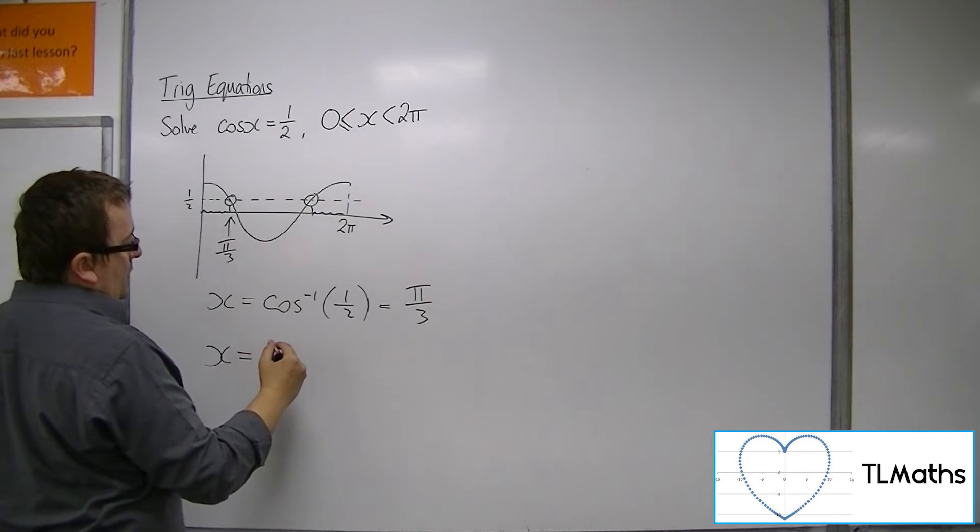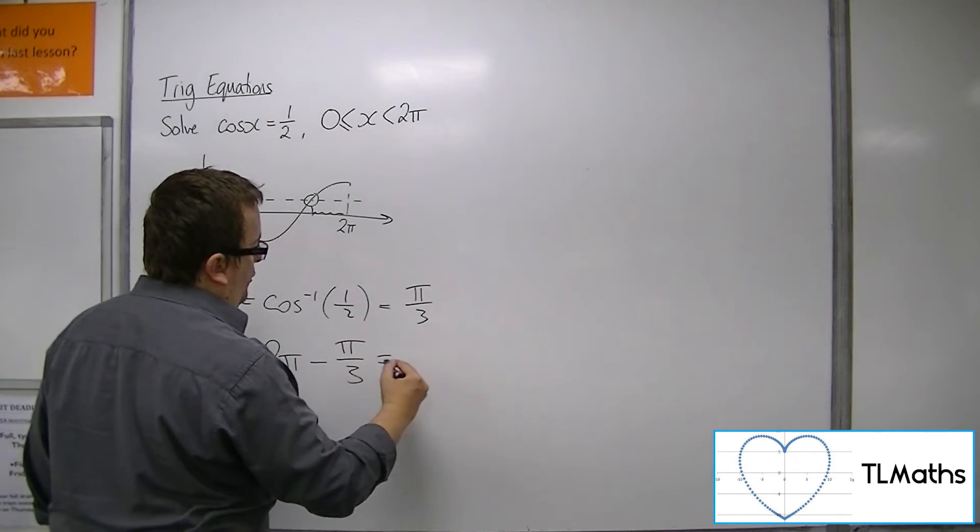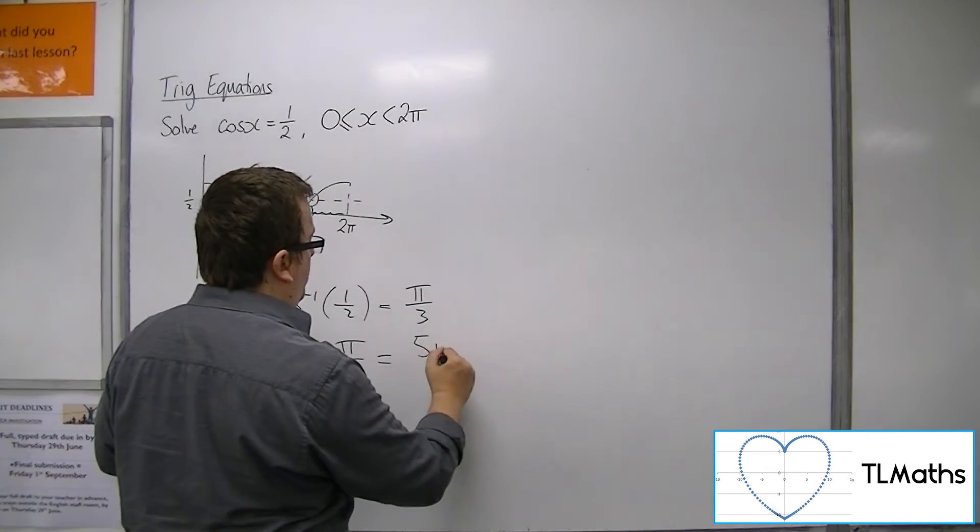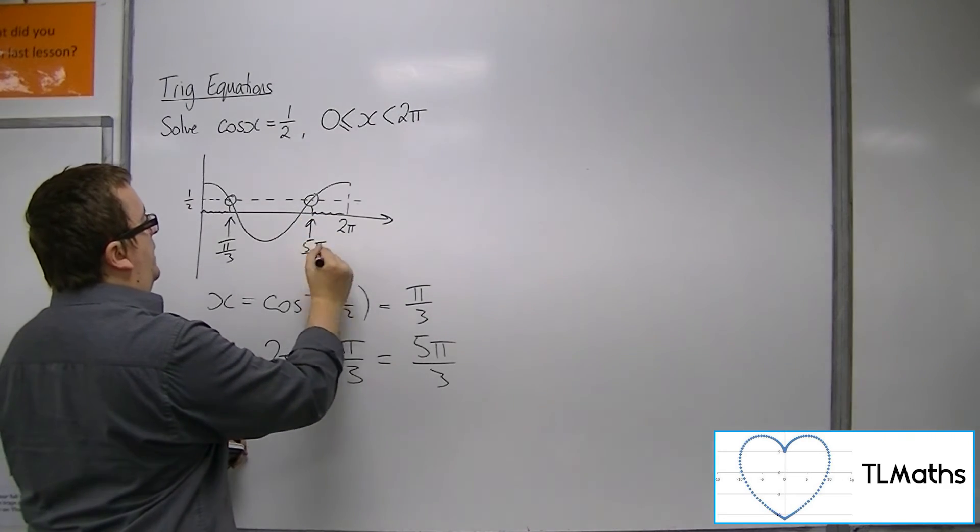So you can find the second solution by subtracting pi over 3 from 2 pi. Now that's 6 pi over 3, so we get 5 pi over 3. So that is my second solution.